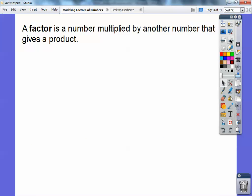A factor is a number multiplied by another number that gives a product. You're thinking, what does that mean? Think of two numbers that you multiply that gets you a bigger number. Those two numbers that you multiplied would be called the factors.